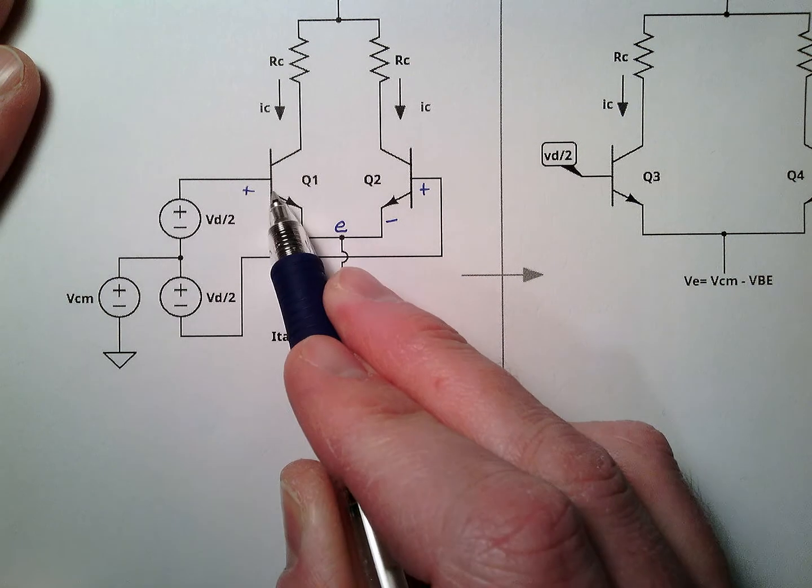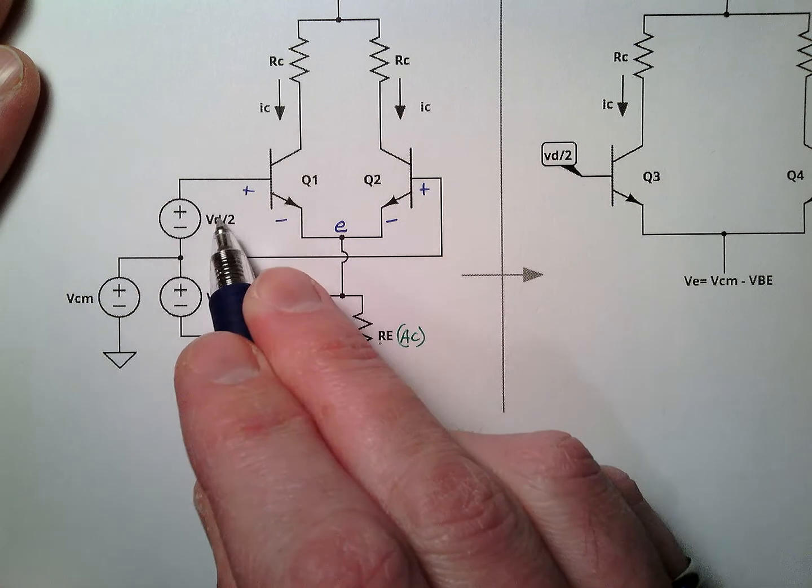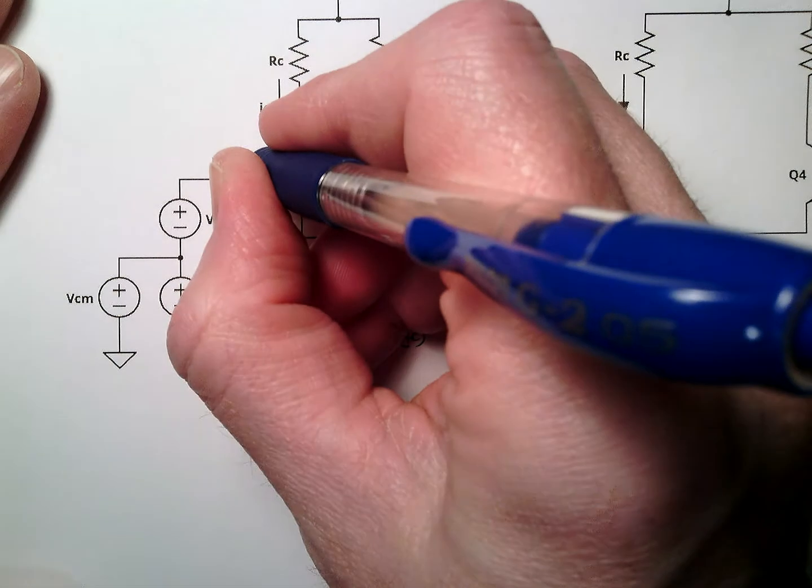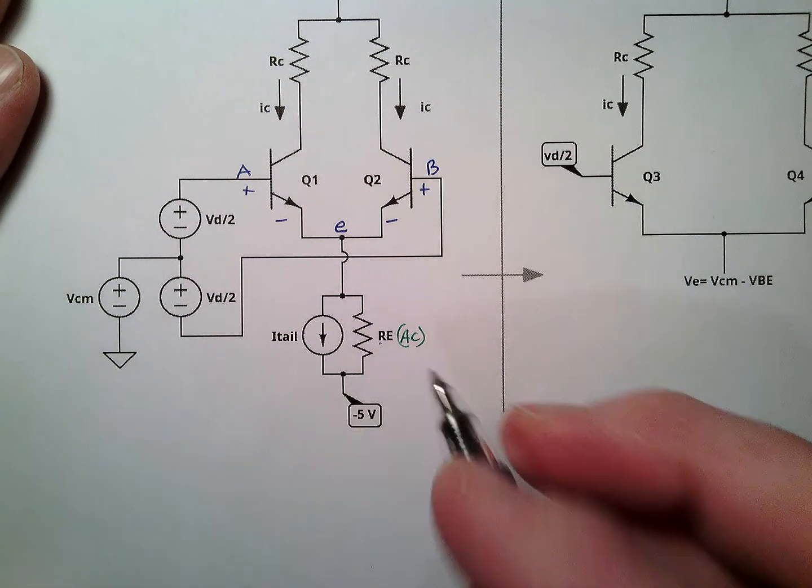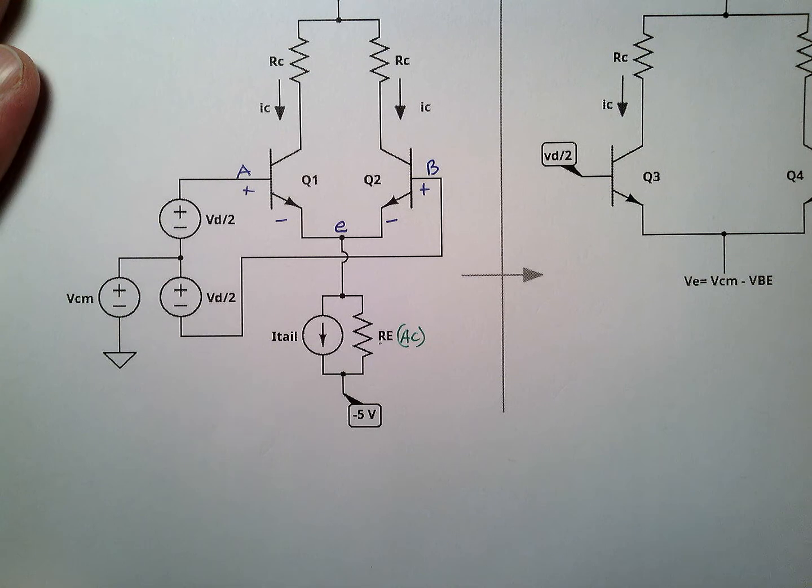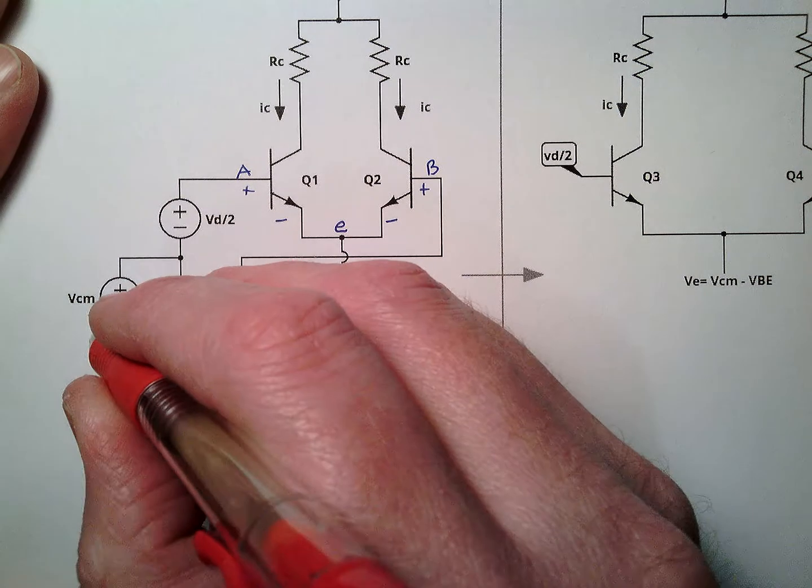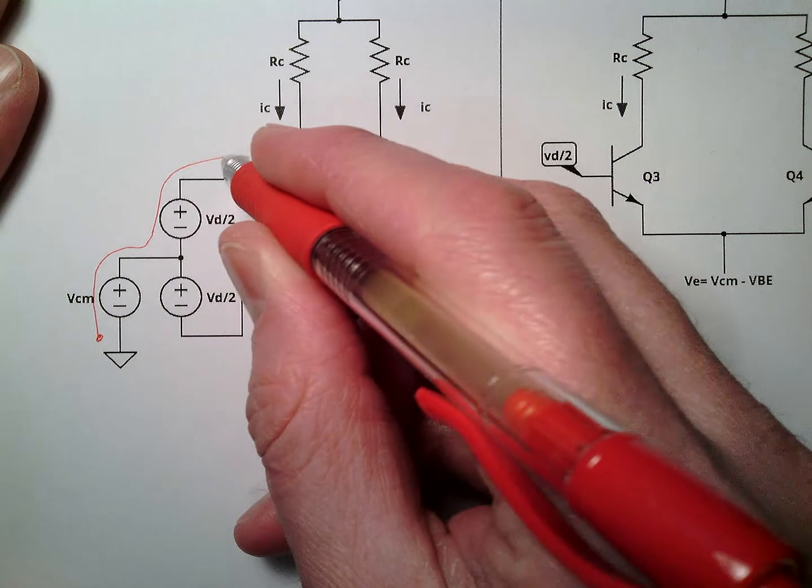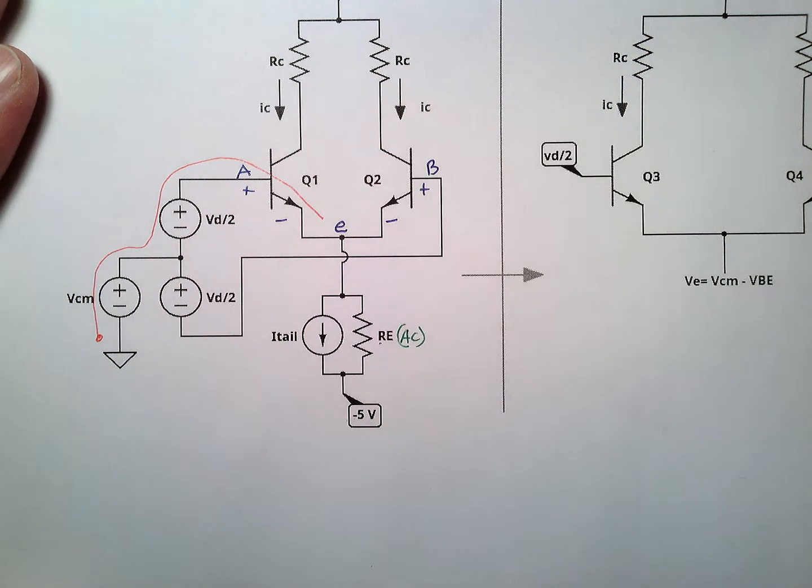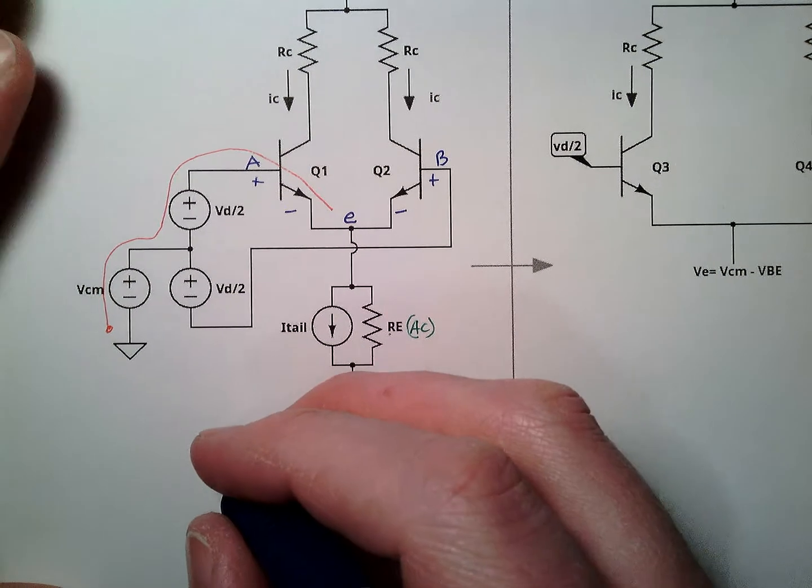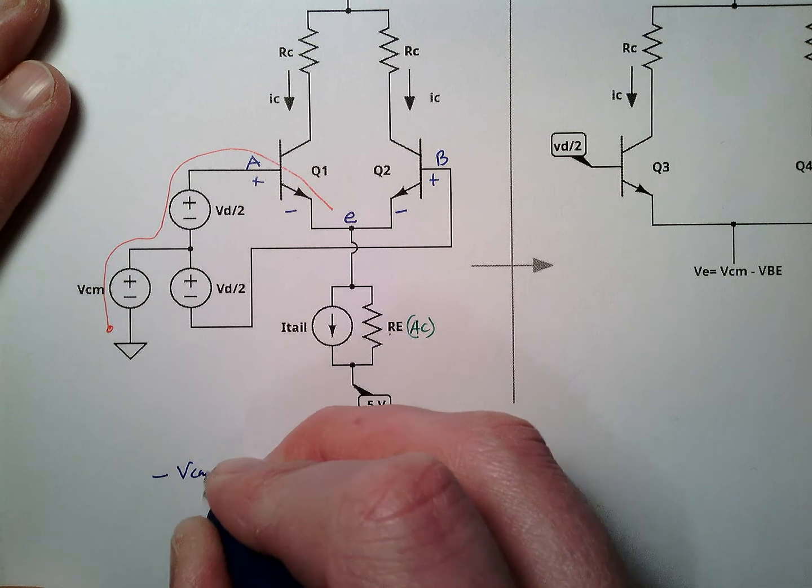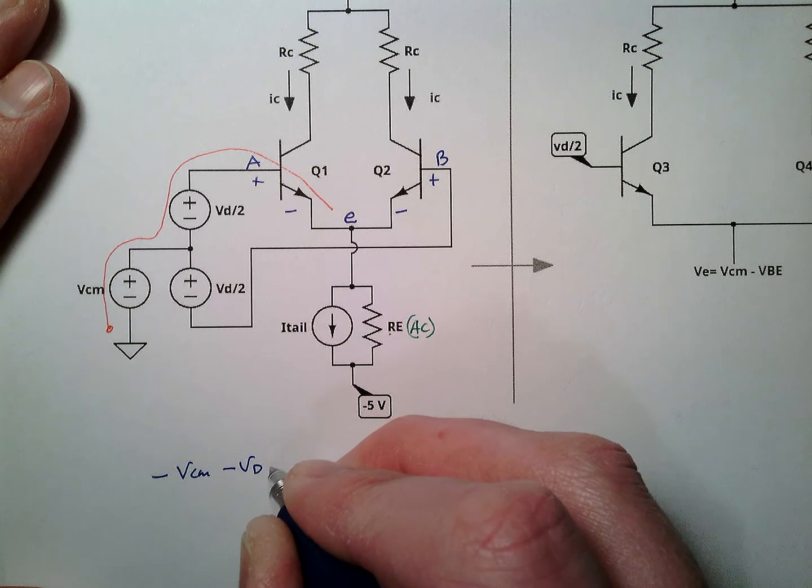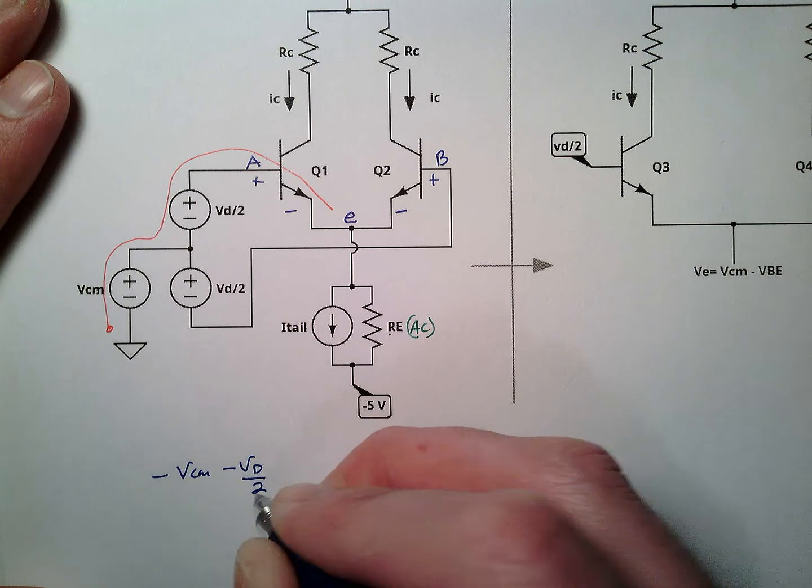Alright? So I'm going to go up here. I'm going to say, alright, so if we have, this is our circuit, so this is A and B. Let's do our KVL loop. Let's see. Let's do red for this for our loop. We're going to start here. We're going to come up, come up here, down, okay? Here we go. We're going to do this minus VCM, minus VD over 2, okay?